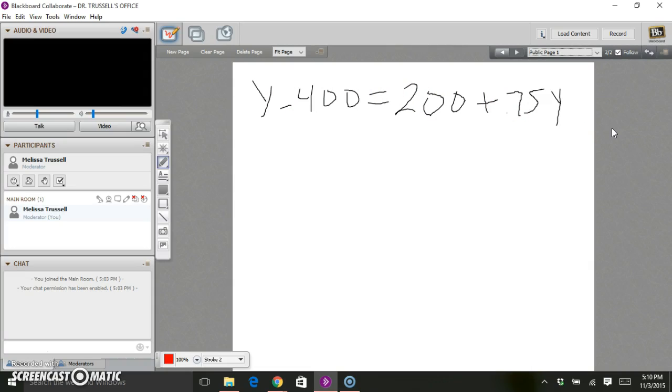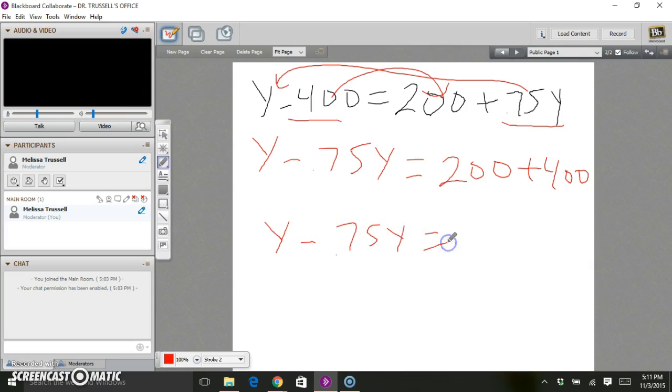Now it's just a matter of solving this equation for Y. Let's get all the Y's on one side together. We get Y minus 0.75Y, bringing this Y to the other side. Then bring this 400 to this side, so that equals 200 plus 400. Y minus 0.75Y equals 600. Now I can factor out a Y. I have Y times 1 minus 0.75 equals 600. So Y equals 600 divided by 1 minus 0.75, which is 0.25.